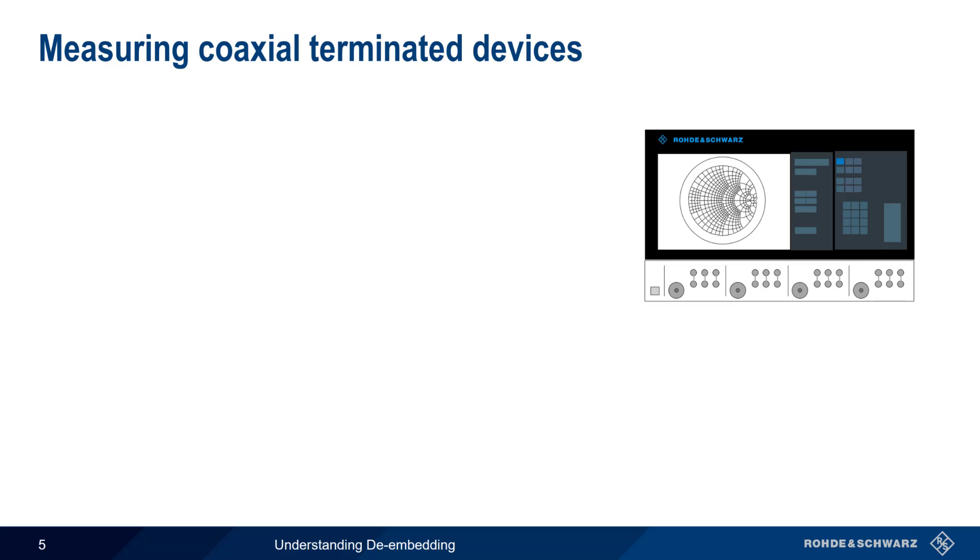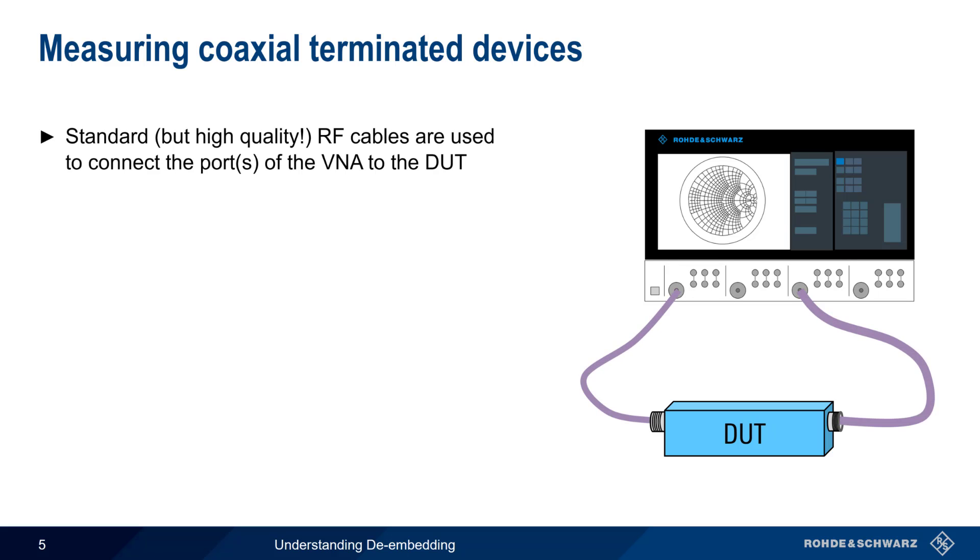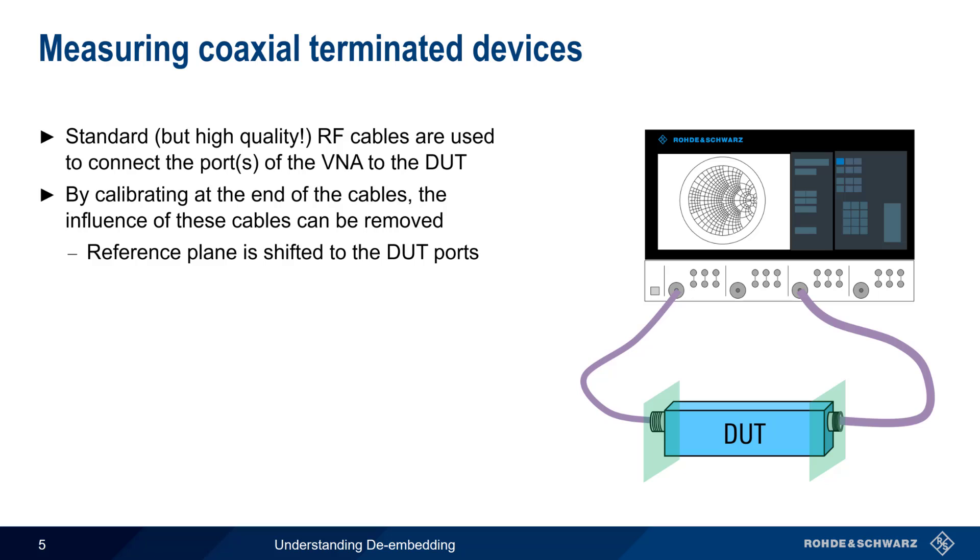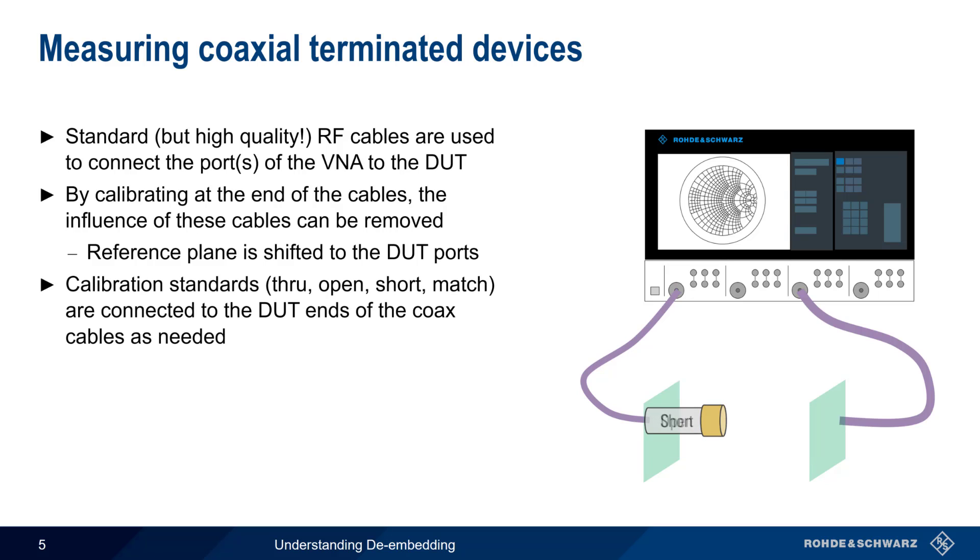Measuring connectorized DUTs, that is, DUTs with coaxial connectors or terminations, is relatively straightforward. We simply use standard, preferably high-quality RF cables to connect to the ports of the VNA. We can remove the influence of these cables by calibrating at the DUT ends of the cables. This moves the reference or calibration plane to the ports on the DUT. This calibration is normally performed by attaching various calibration standards, such as a short, an open, etc., to the DUT ends of the coax as necessary. This is a common procedure in network analyzer measurements, and the methodology is fairly standard for all types of coaxial terminated devices.